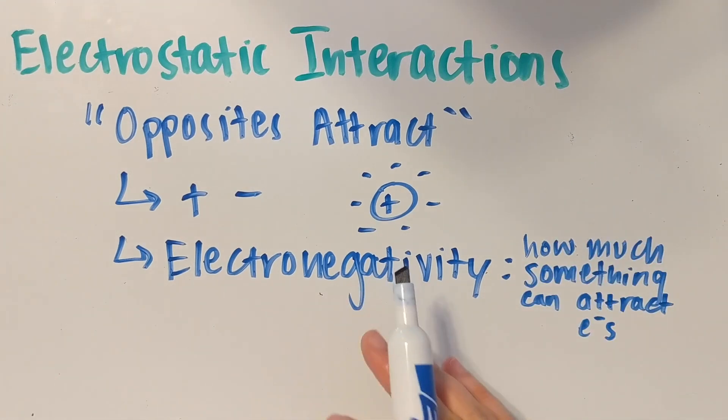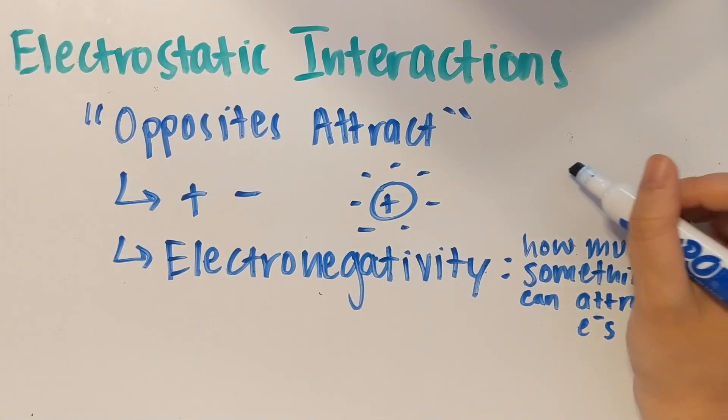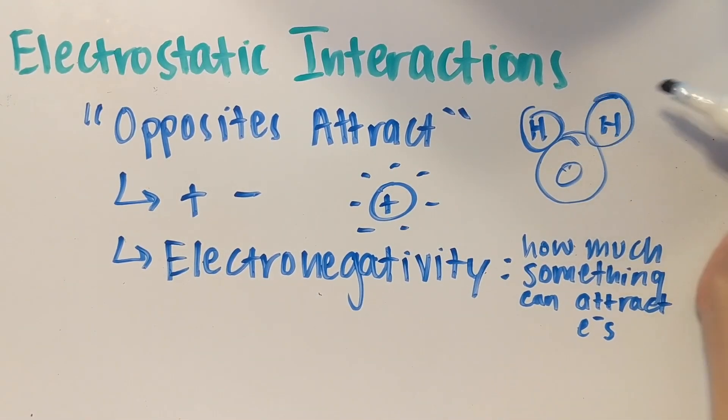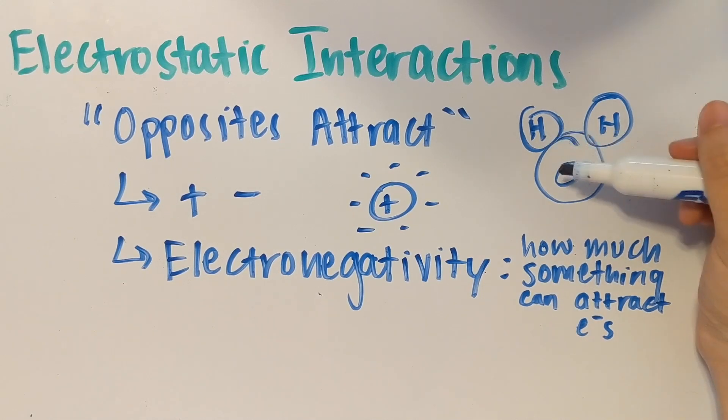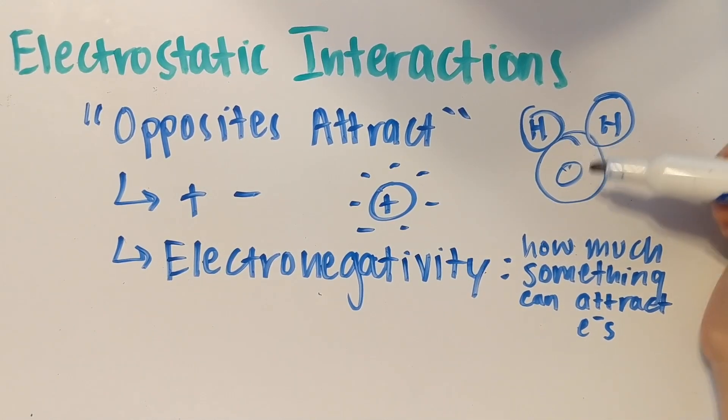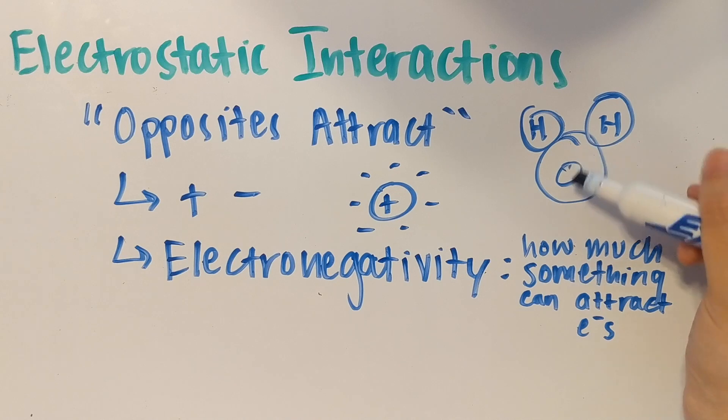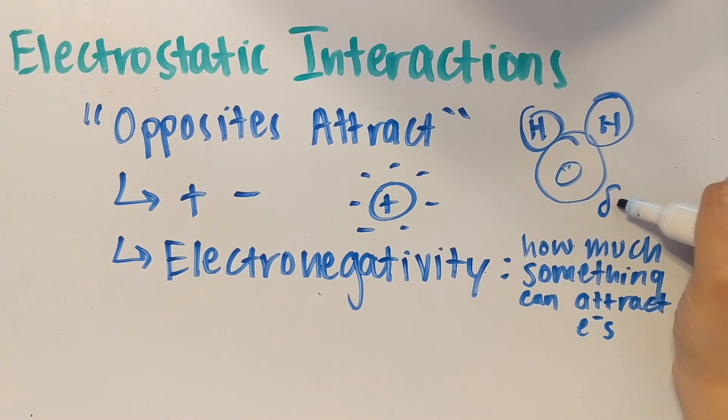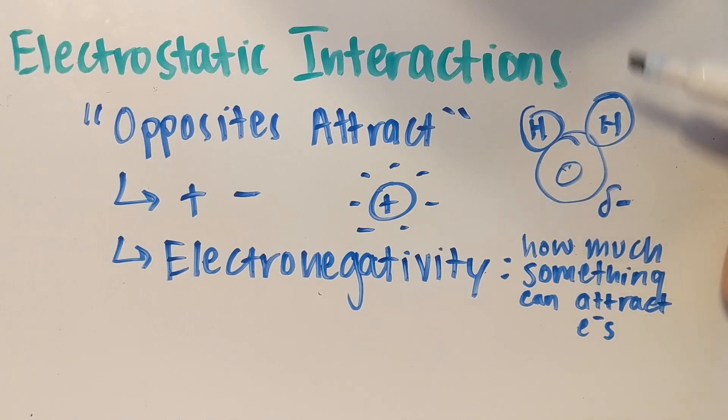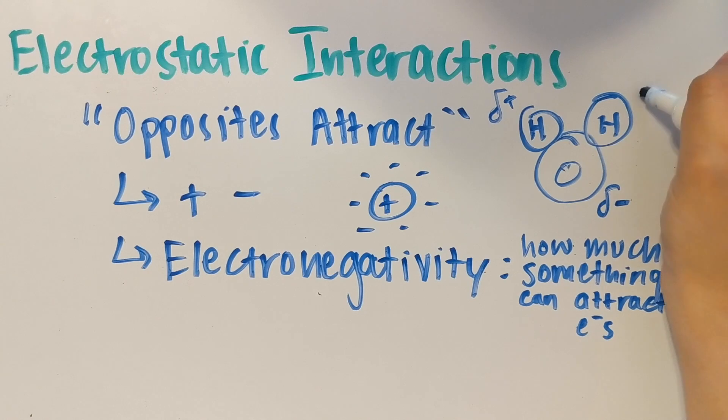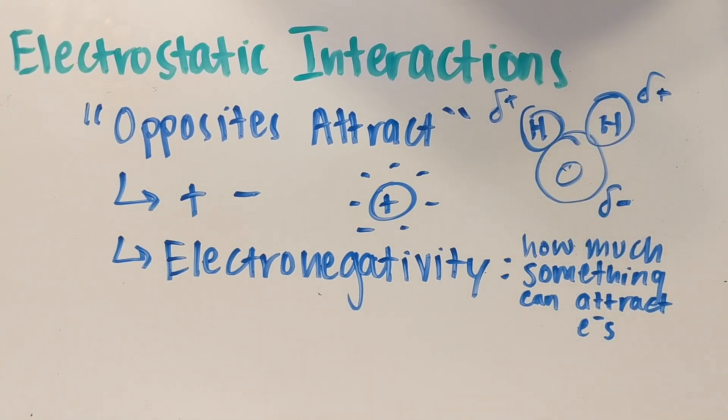A super common example of an electronegative element would be oxygen, and you can see it in an H2O molecule. When the electrons are being shared between the two hydrogen atoms and the oxygen atoms, the electrons actually tend to stay closer to the oxygen atom for most of the time because of oxygen's high electronegativity. So because it's attracting the electrons over to itself, it gains a more negative or partial negative charge on this side of the H2O molecule, and there's actually more positive charges on the hydrogen sides of the water molecule.